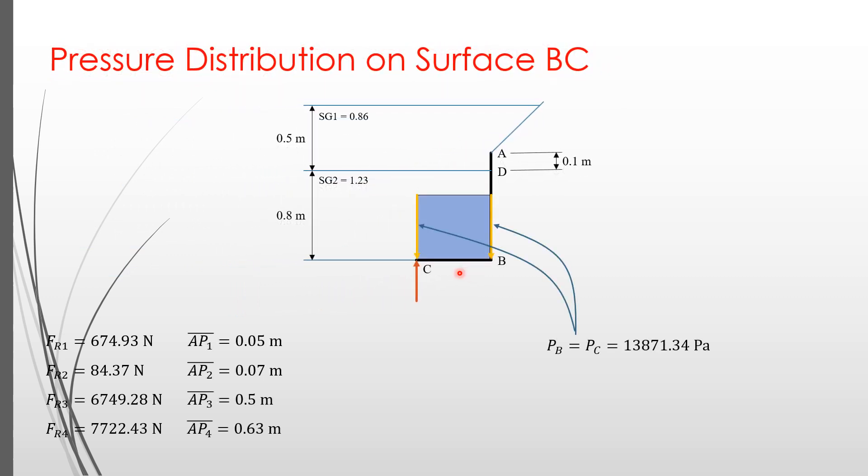Now, let's consider the horizontal surface BC. The pressure at B is the same as the pressure at C. It is what we found previously for point B, which is 13,871.34 Pascal.